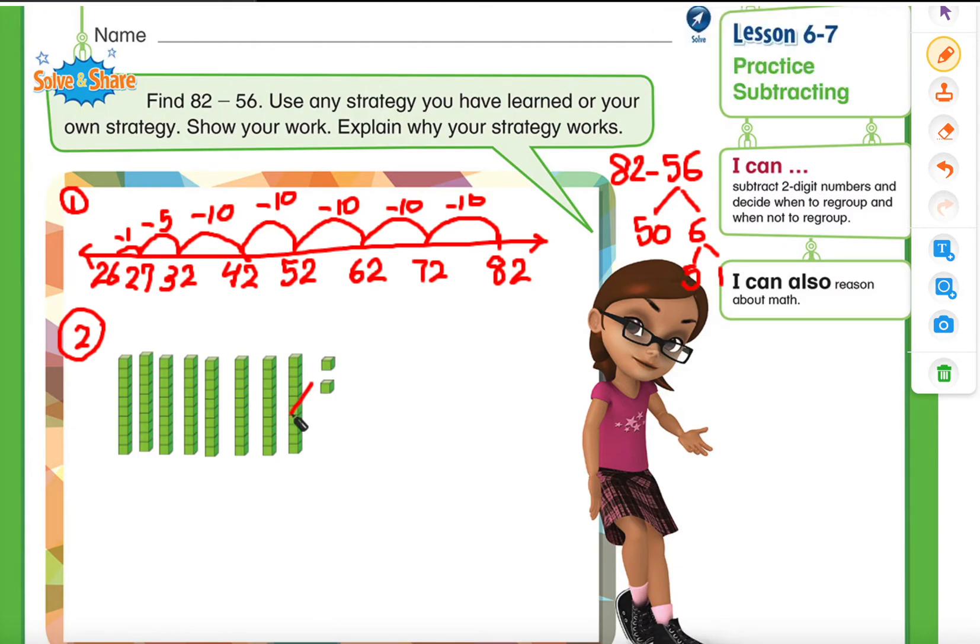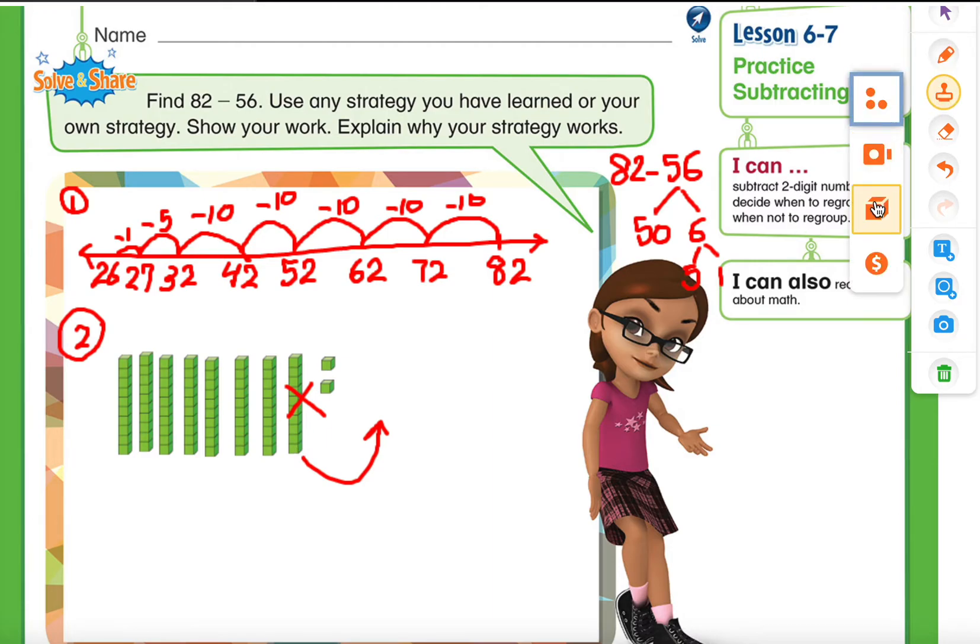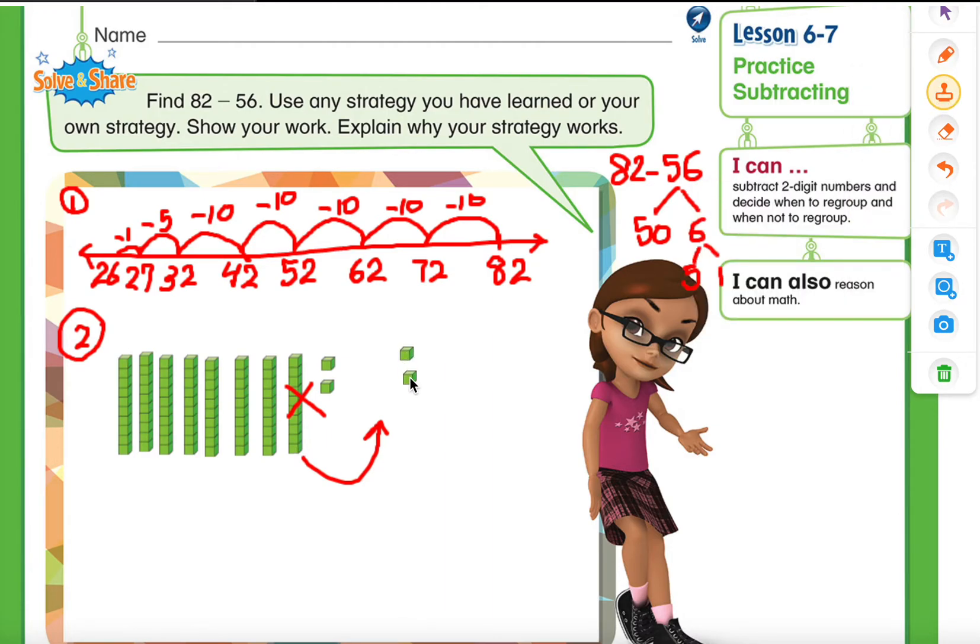So what I need to do—I need to regroup. So I am going to change this 10 into 10 ones. This ten, I will regroup into 10 ones: 1, 2, 3, 4, 5, 6, 7, 8, 9, 10. So what I did simply here, I just exchanged this 10 into 10 ones. Now I have enough ones to take away.